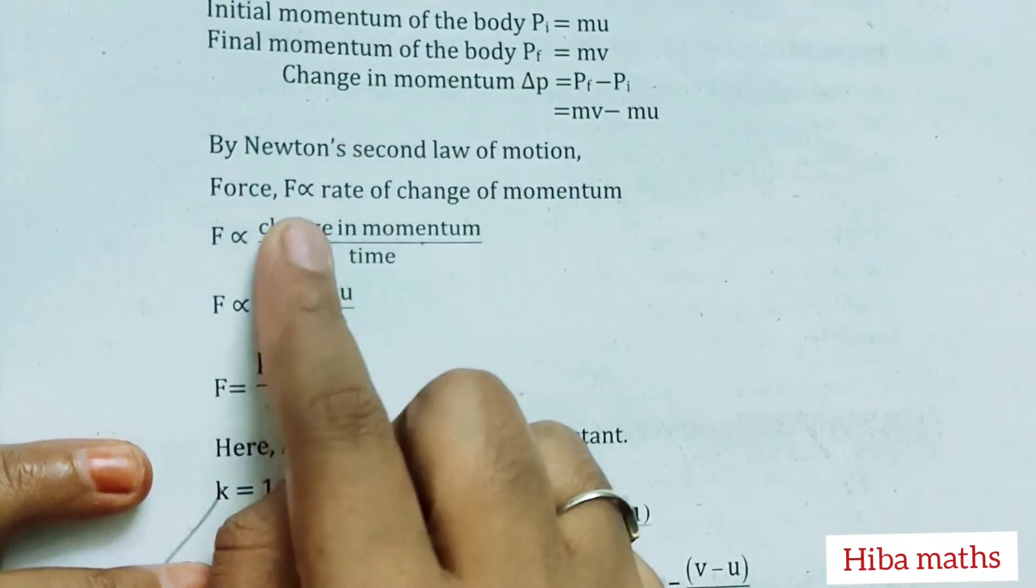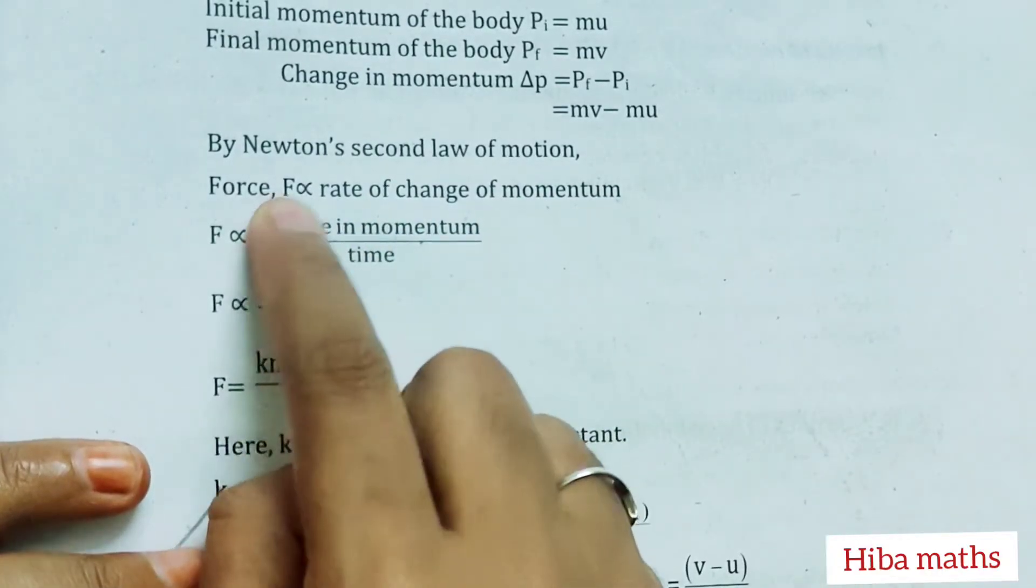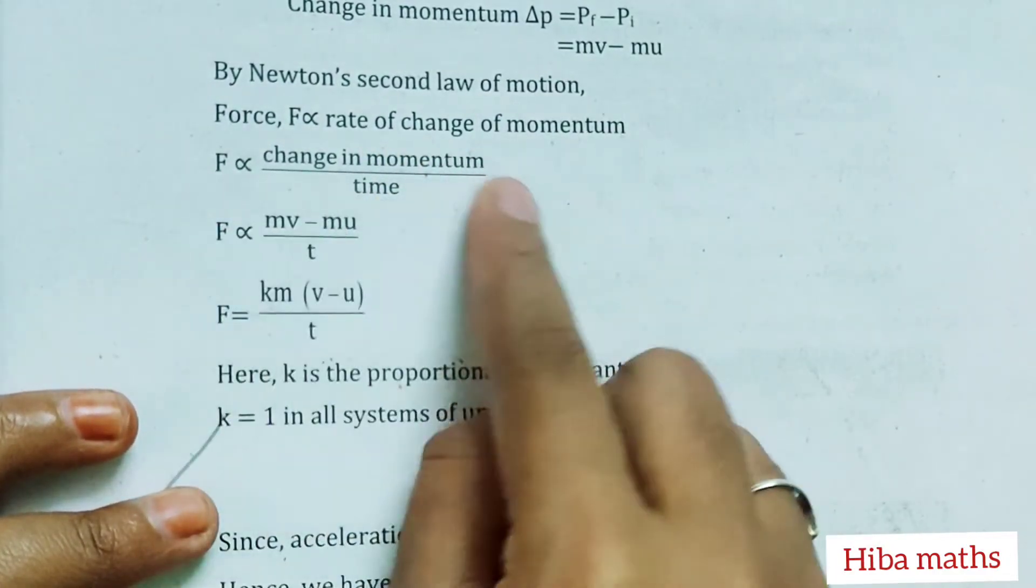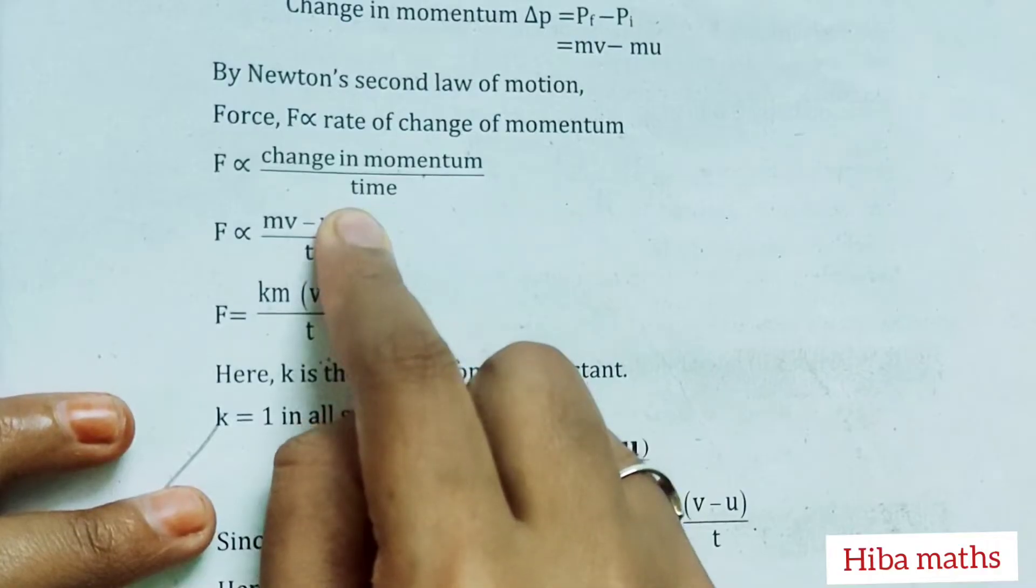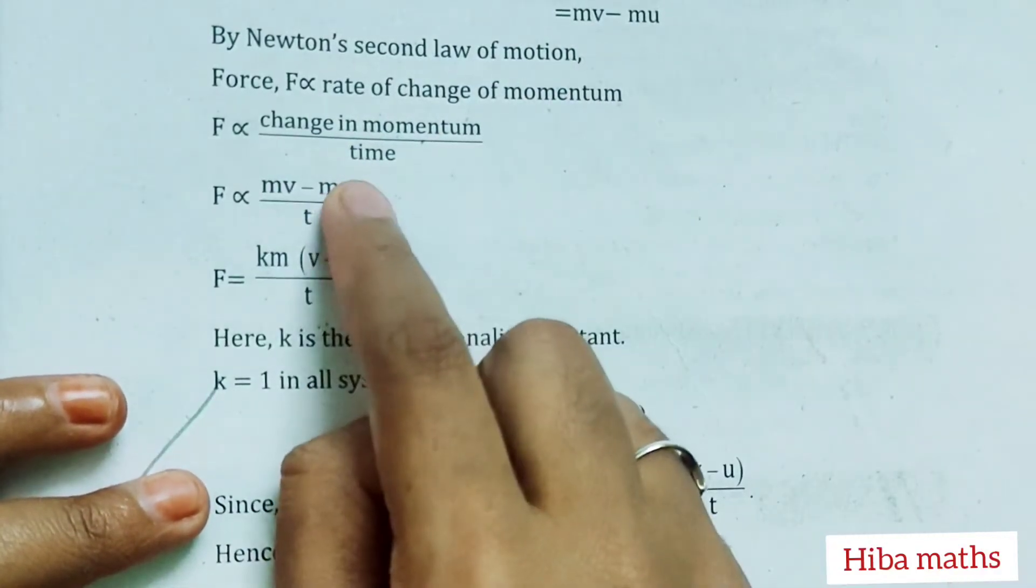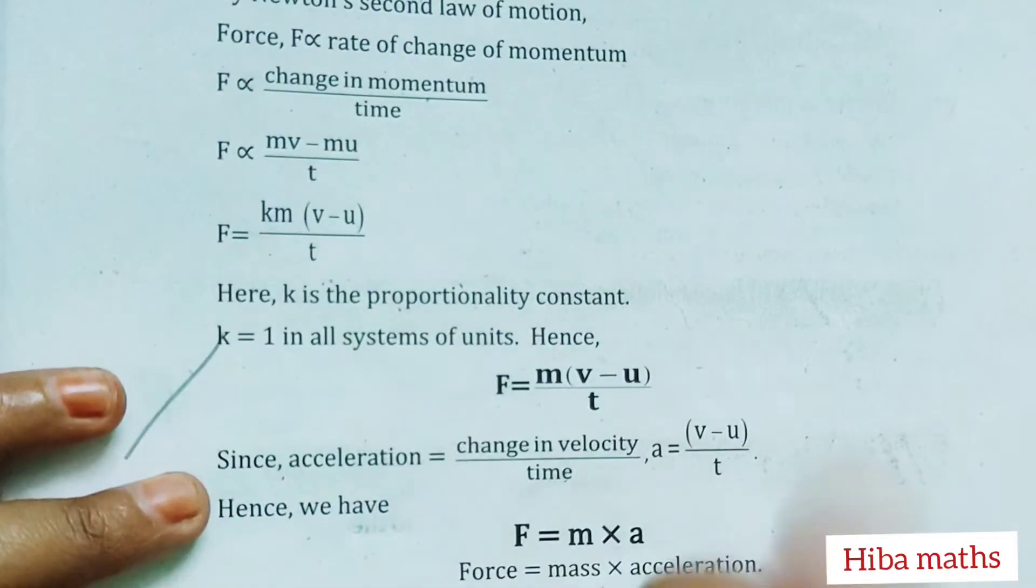force is directly proportional to the rate of change of momentum. So, F ∝ (change in momentum)/time. F ∝ (mv - mu)/t.